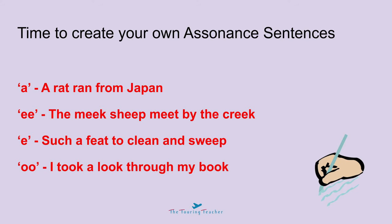Hopefully you've already written some of your own sentences using assonance based on those vowel sounds. If you want a little more inspiration, I'm going to put my sentences up on the screen. We have: A — 'a rat ran from Japan'; double E — 'the meek sheep meet by the creek'; E — 'such a feat to clean and sweep'; and double O — 'I took a look through my book'.